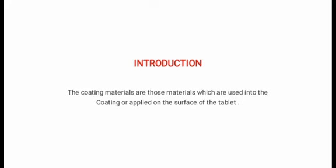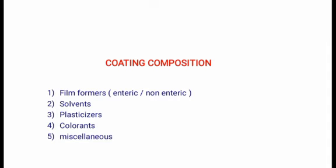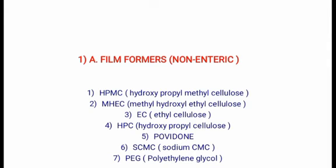We will start with the introduction. First we will see a definition of tablet coating materials. The coating materials are those materials which are used in the coating or applied on the surface of the tablet. It offers good stability of the product and can also strengthen the tablet core. The tablet coating compositions are: film formers in enteric or non-enteric materials, solvents, plasticizers, colorants, and miscellaneous.